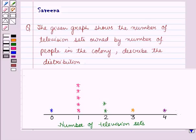Hello and welcome to the session. In this session we'll discuss a question which says that the given graph shows the number of television sets owned by number of people in the colony. Describe the distribution.